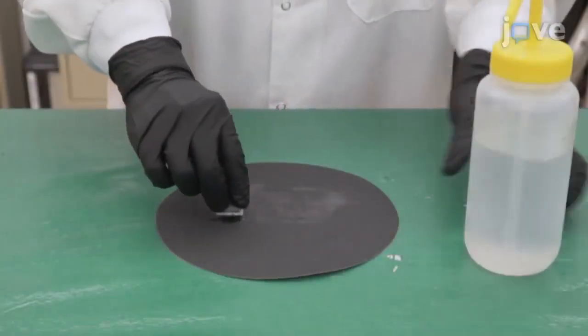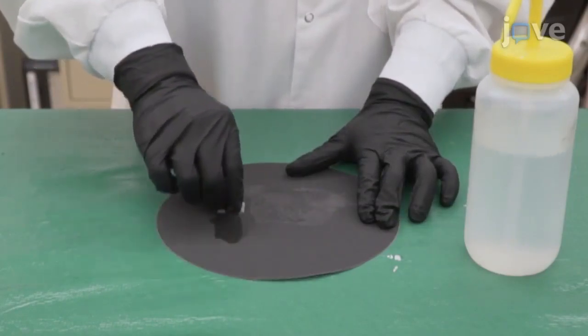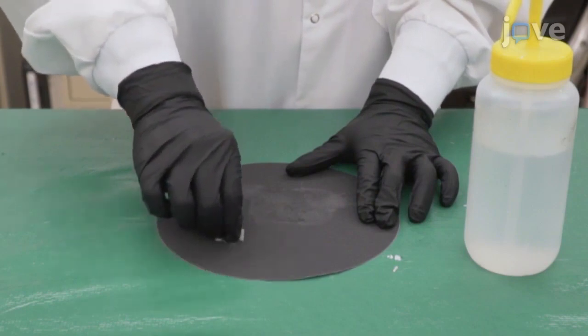Using 180 grit sandpaper, mechanically grind one side of each sample for 30 seconds along one arbitrary direction.